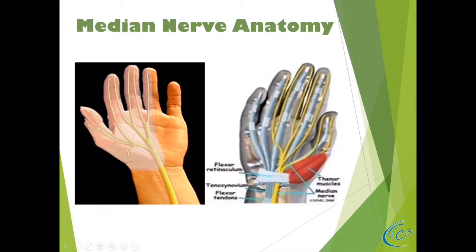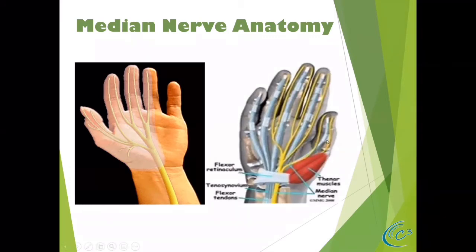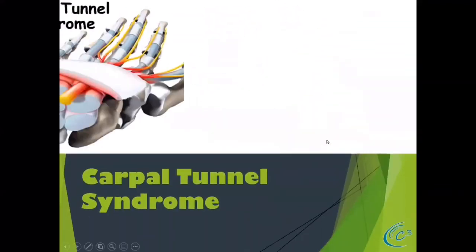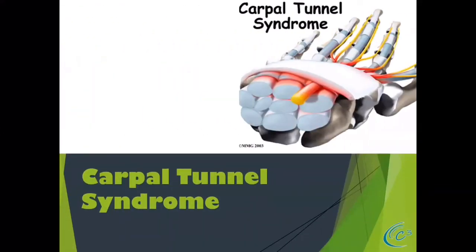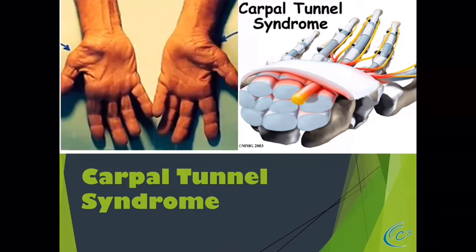Here's one with the flexor retinaculum showing the innervation. The next slide identifies carpal tunnel syndrome — see how this is thickened over here? This is compressing the median nerve, showing that this is not a happy nerve. The nerve is irritated distally as shown here in red.